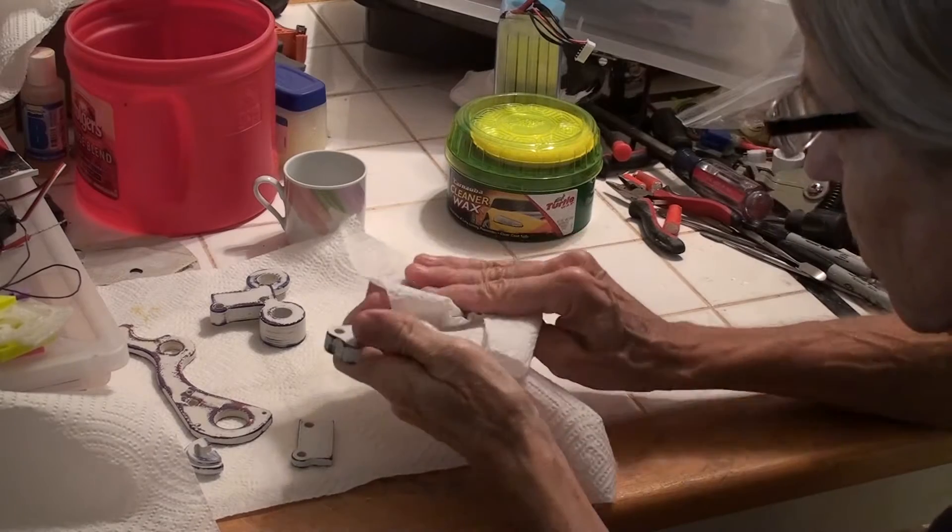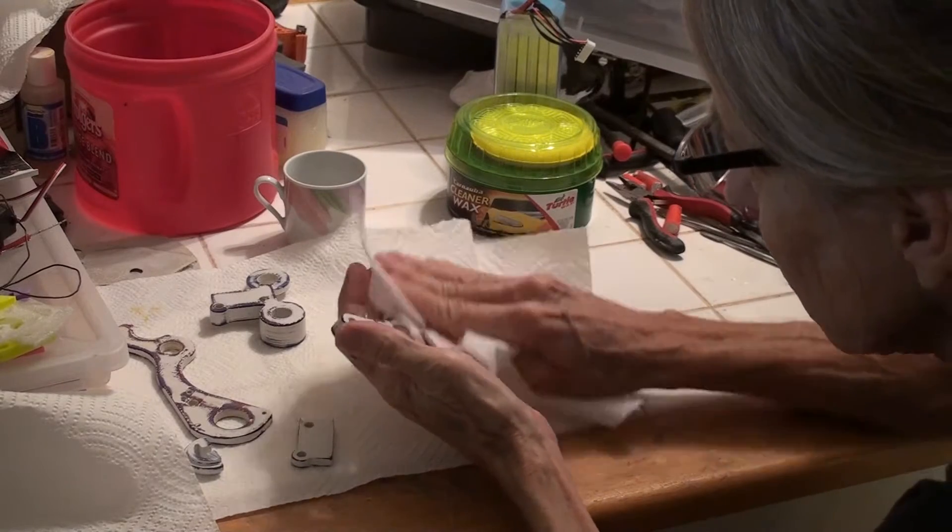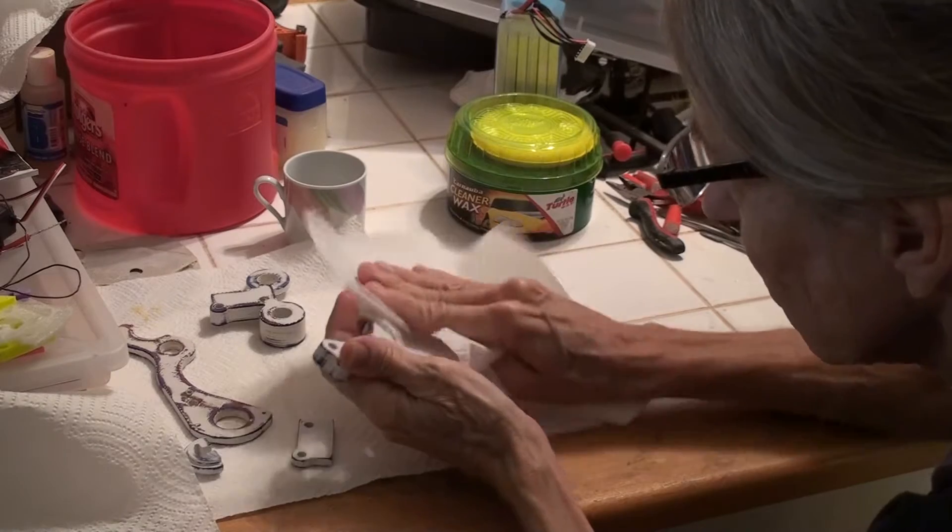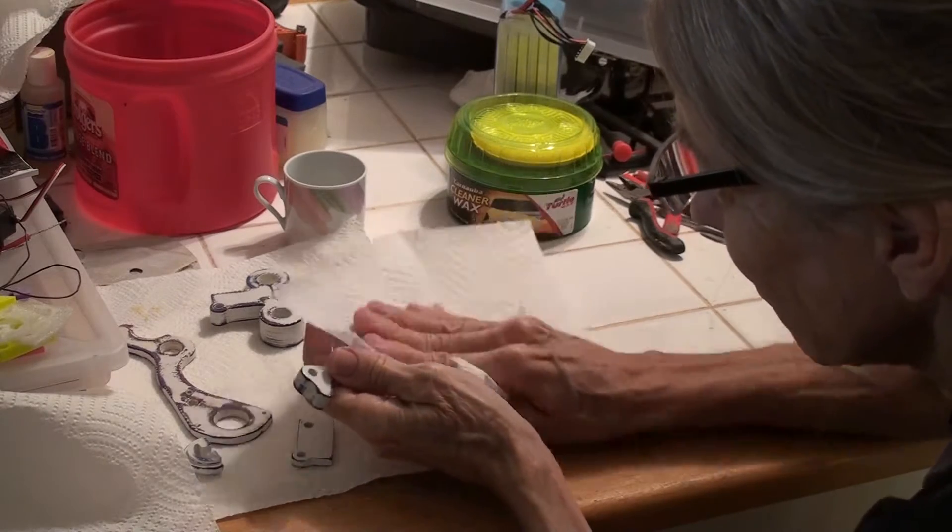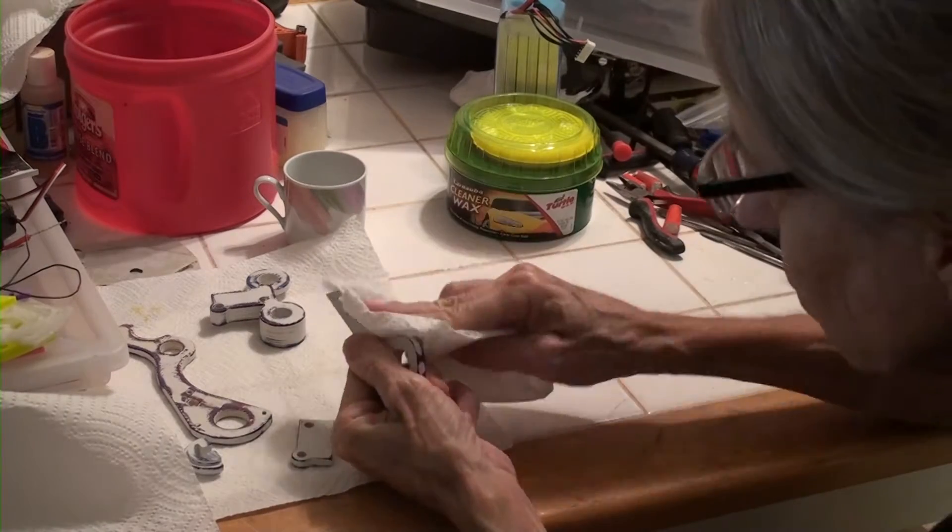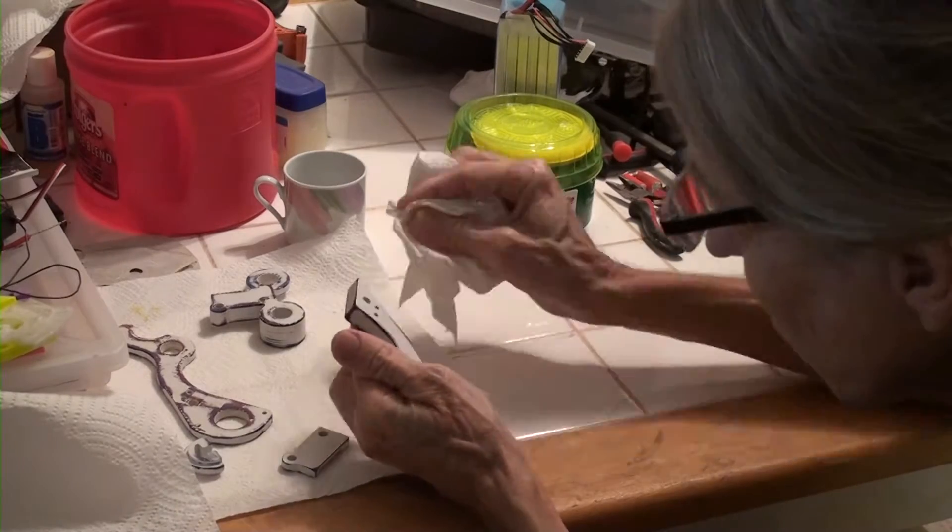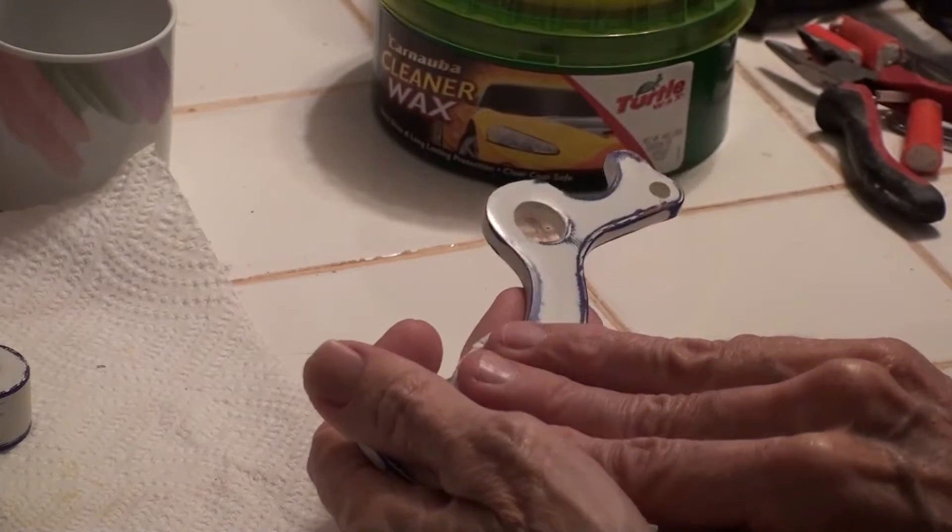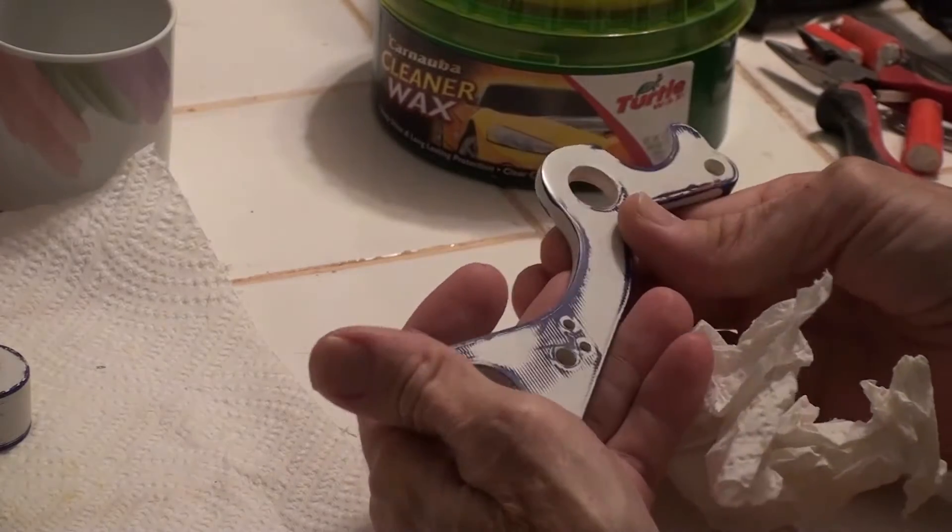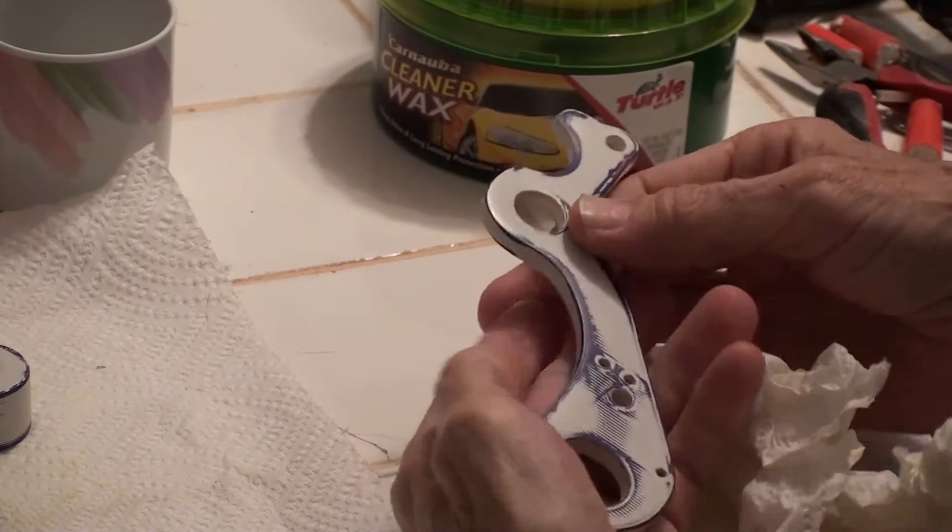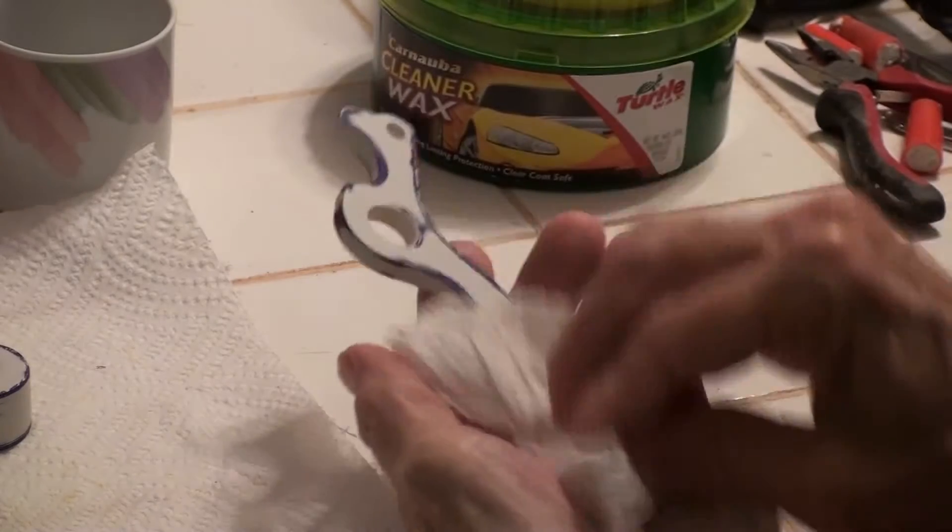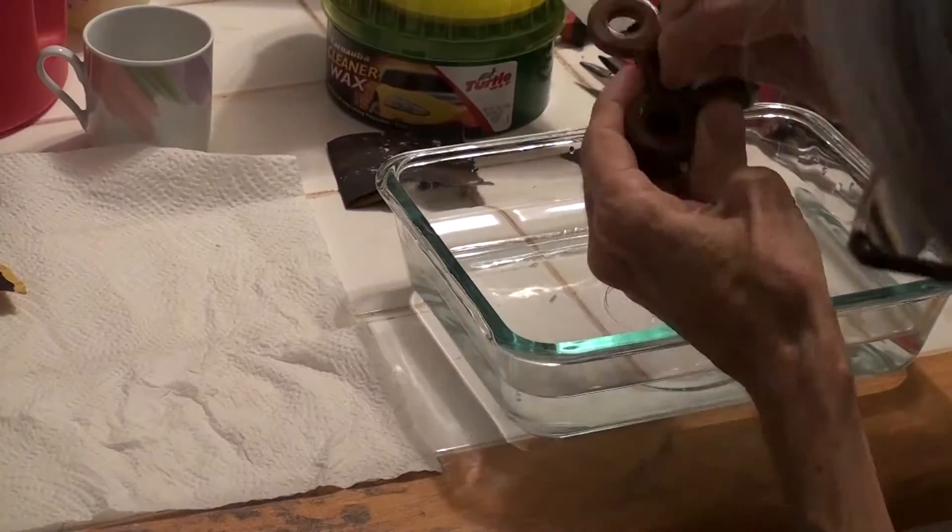Once the wax is dry, you buff it off and it should leave a high gloss on the part. This glossy surface will let me see any imperfections left in the paint. This looks pretty good, but in other places, I found some little scratches and stuff that I hadn't sanded through.